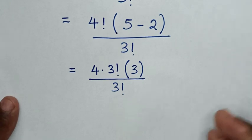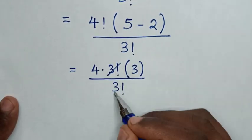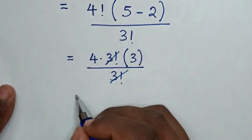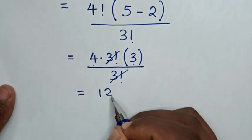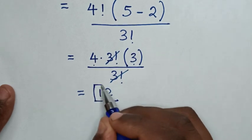Then, in next step, to simplify, this 3 factorial will cancel with this one. So here it will be equal to 4 times 3 is 12. So this is our final answer.